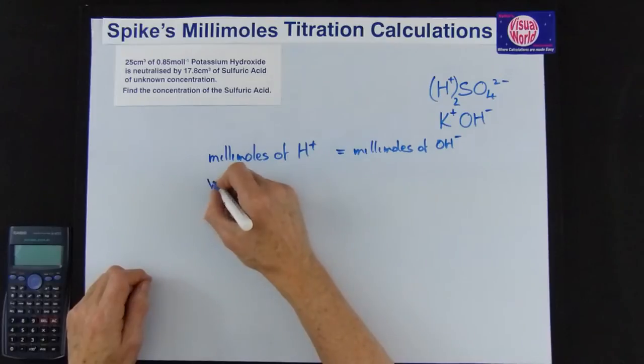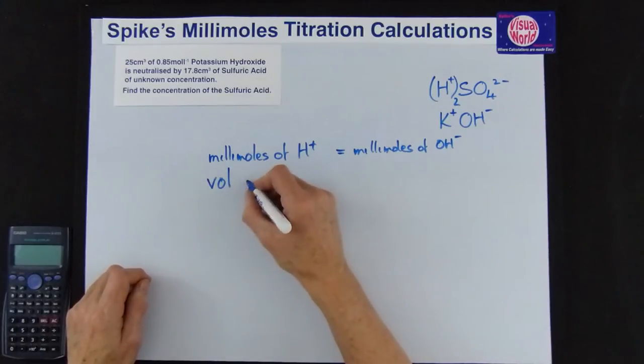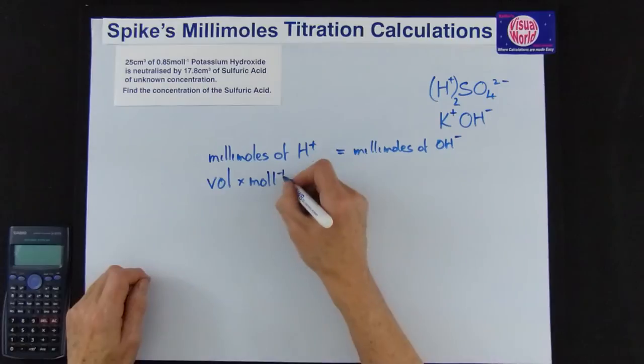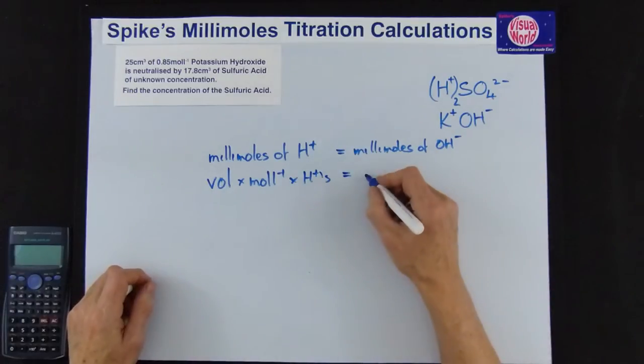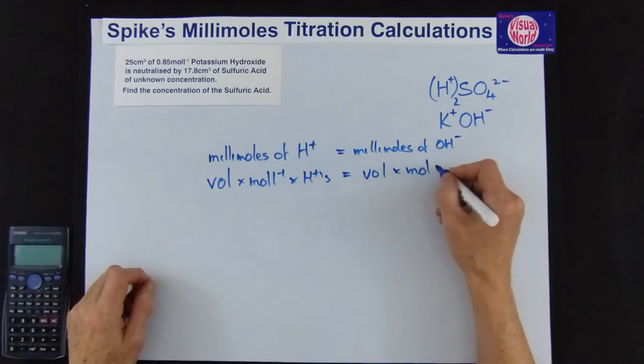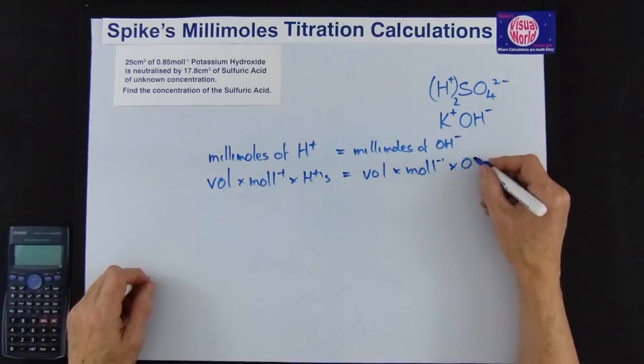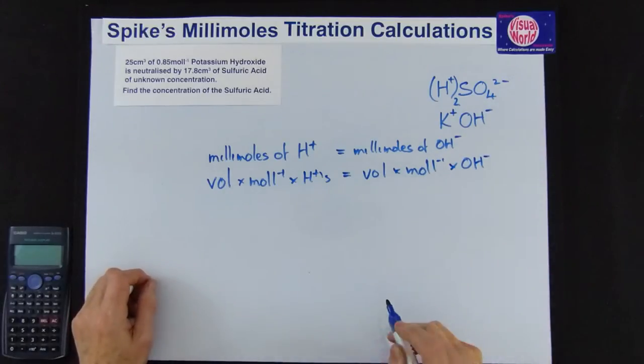So we can just fill in the side. First of all I don't write just single letters, it's far easier to remember if you write out wee words, so it's volume times moles per liter times the number of H+ is got to be equal to the volume times the moles per liter for the alkali times the number of OH- in the formula.